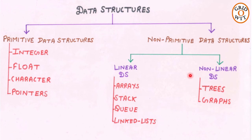In non-linear data structures, elements don't form a linear sequence. Examples include trees, graphs, etc.